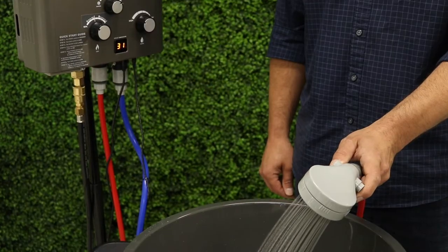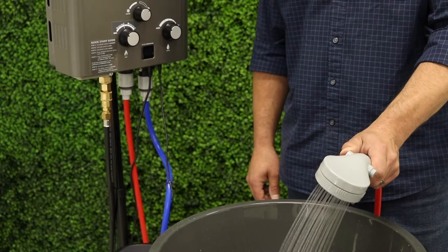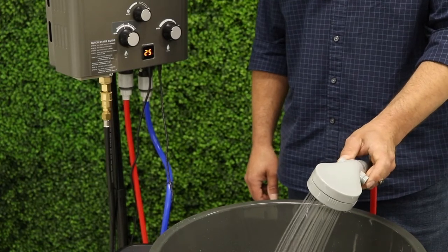Once running you simply operate the unit from the shower head. When you push the button off the water stops running and you'll notice the LED display goes blank. Once you engage the shower head the unit will start up again and the LED display will show the water temperature.